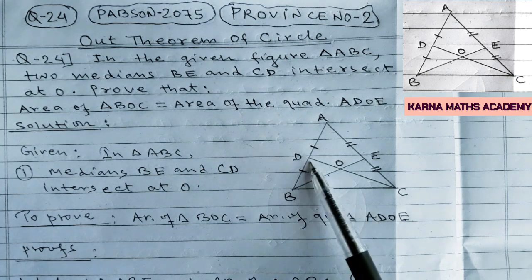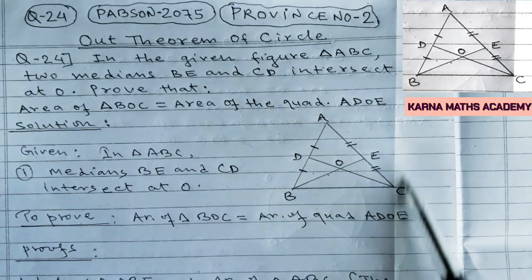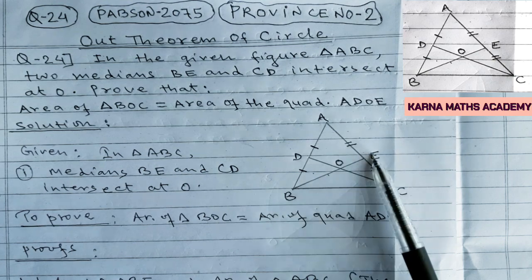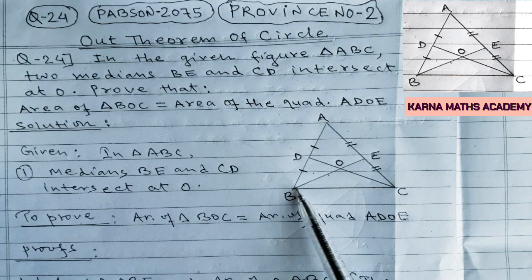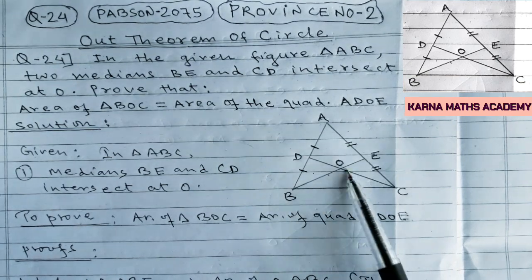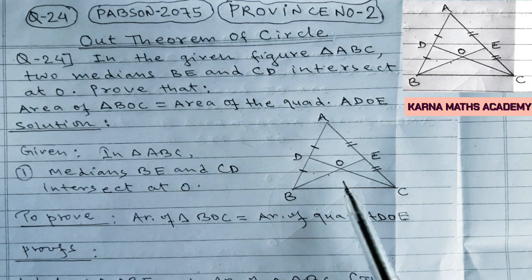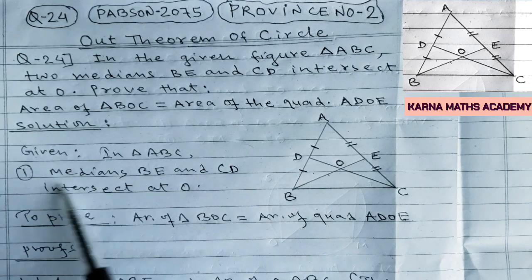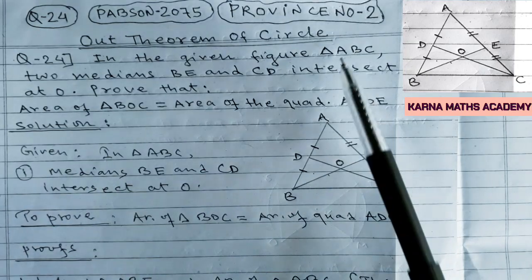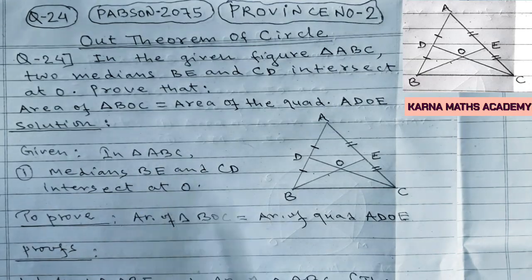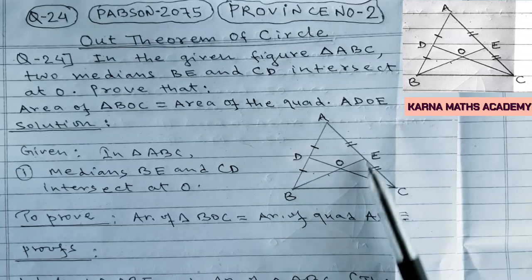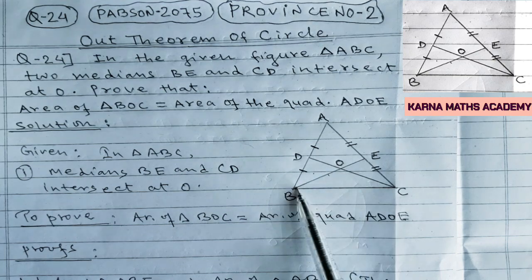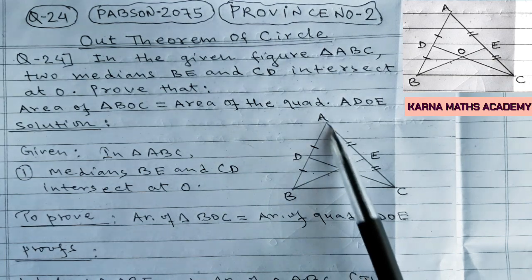We know that a median divides a triangle into two equal triangles. We are given two medians BE and CD, so we will use the relation between a triangle and its median to get the solution. Given: in triangle ABC, medians BE and CD intersect at O. We have to prove that area of triangle BOC is equal to area of quadrilateral ADOE.